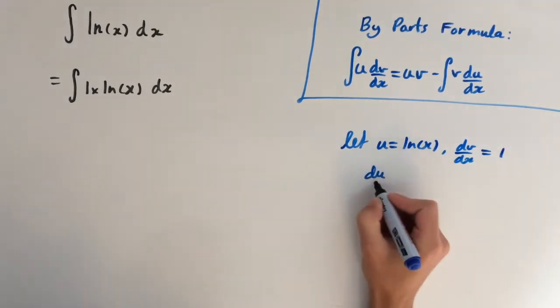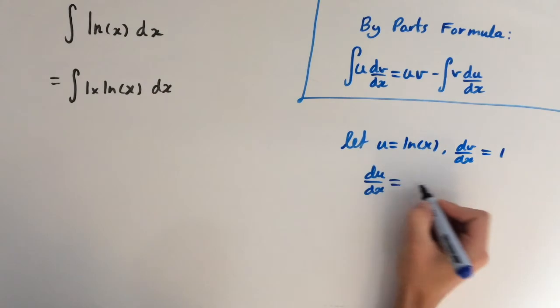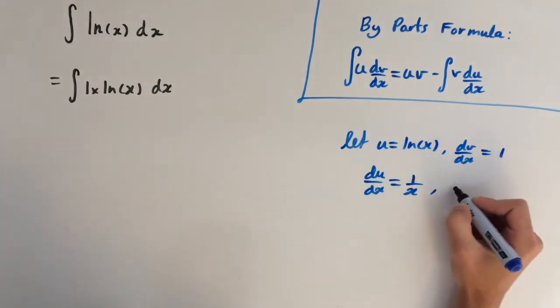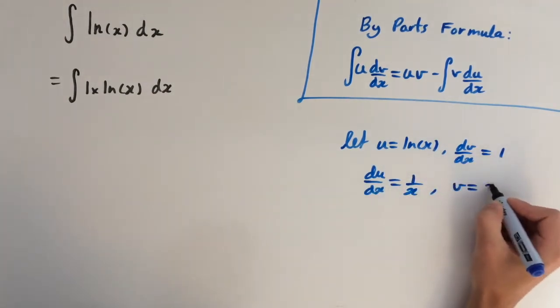So du/dx, when we differentiate this, we get 1 over x and v, when we integrate 1, we'll just get x.